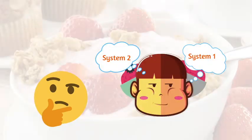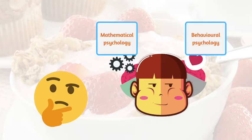Emotionally attaching to a product is the System 1 thinking process, whereas accepting after analysis is the System 2 thinking process of the human mind. System 1 thinking is analyzed using behavioral psychology. System 2 thinking is analyzed using mathematical psychology.